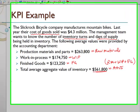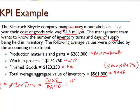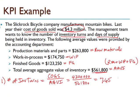Now we have all the information we need. First, we're asked to calculate the number of inventory turns. Recall that inventory turns is nothing more than cost of goods sold divided by our average aggregate value of inventory. In this case, our cost of goods sold was $4.3 million divided by $561,800. If you enter that into your calculator, you would find that equals about 7.65 turns.